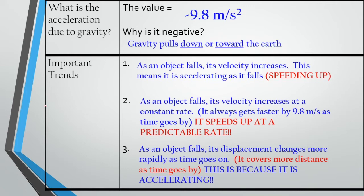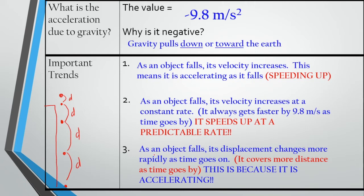Say we have an object located on top of some tall cliff or hill — perhaps a ball up there. After one second, the ball might be here. After two seconds, the ball might be here. Three seconds and then finally four seconds. We can see that the distance the ball is covering over these time intervals is increasing — it's getting bigger and bigger. That's all point three is saying, and it's because the ball is experiencing acceleration, so it covers more and more distance as time goes on.